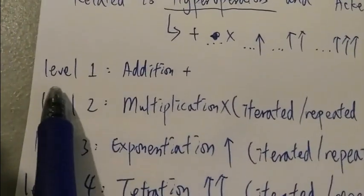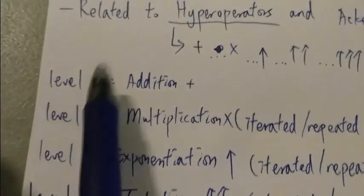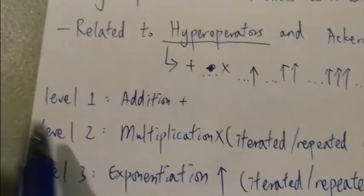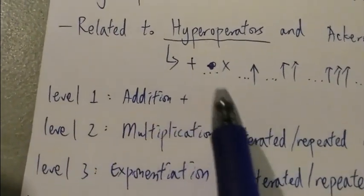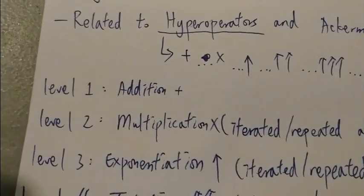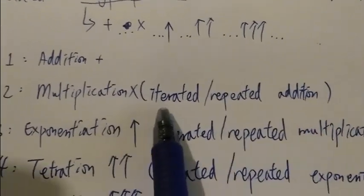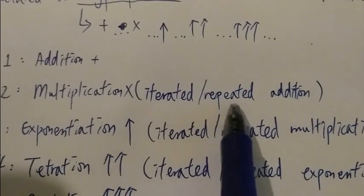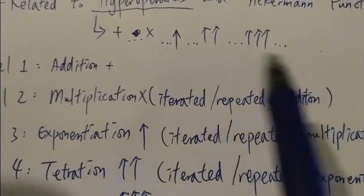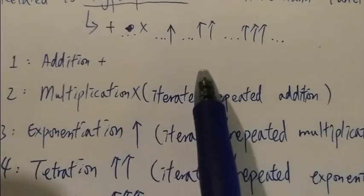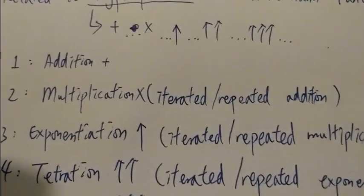We can look at it this way. Level 1 of the hyperoperators is addition. For example, 1 plus 1 plus 1. Level 2 is multiplication, which is iterated or repeated addition. For example, 3 plus 3 plus 3 just equals 3 times 3.